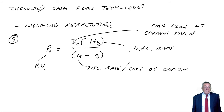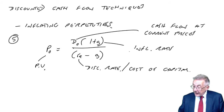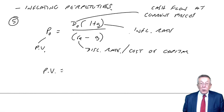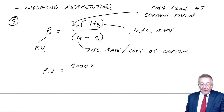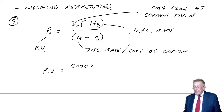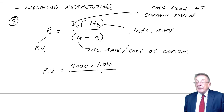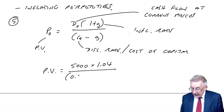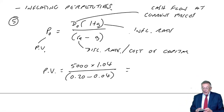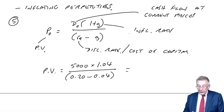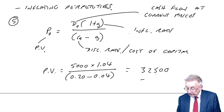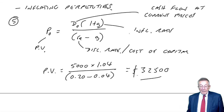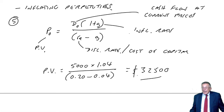So we use exactly the same formula, and it's then simply sticking the figures in. For this one, the present value is: the current cash flow is 5,000, times 1.04 — the inflation rate of 4% — over the discount rate of 20% minus the inflation rate of 4%. That's 5,000 times 1.04, divided by 0.16. I get 32,500. Nice and easy — just sticking figures into the formula.